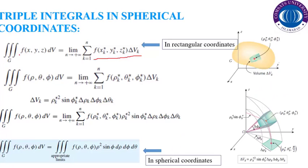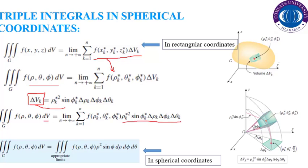The integral in the rectangular coordinate system uses x, y, z. When we move toward the spherical coordinate system, x, y, z are converted to rho, phi, and theta. The volume element dV in spherical coordinates is represented as rho squared sin phi drho dphi dtheta. Without going into the derivation, you can follow exercises 14.6 and 14.7 for details. We directly apply the replacement of dV by this expression.